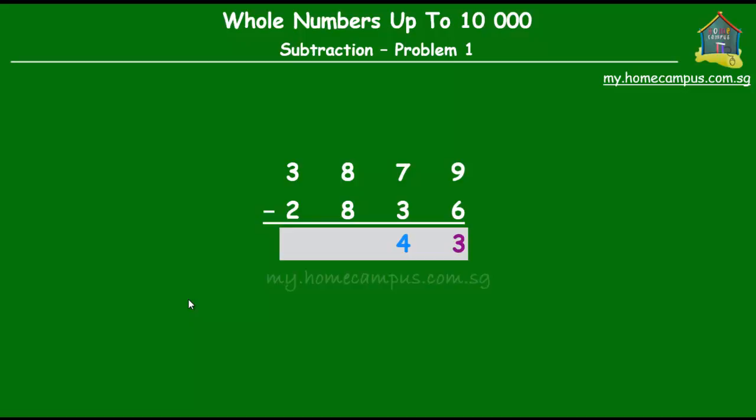Third step, subtract the hundreds. 8 hundreds minus 8 hundreds is 0 hundreds. And finally subtract the thousands. 3 thousand minus 2 thousand is 1 thousand.